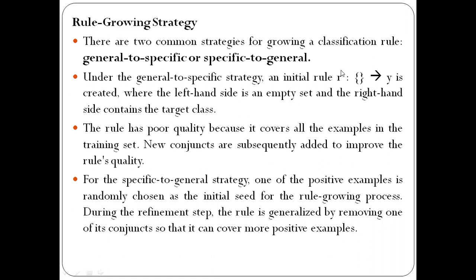In each step of the general-to-specific strategy, we improve the rule by adding one conjunct on the LHS part. In the general rule — the default rule — the rule antecedent is empty and the LHS has a default class level. Each time we add a new conjunct, which is an attribute-value pair on the LHS, in order to improve the rule's quality.